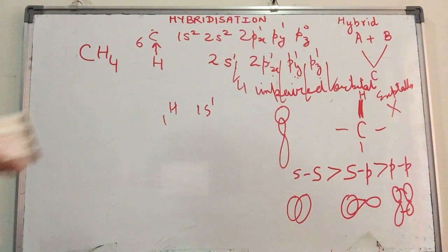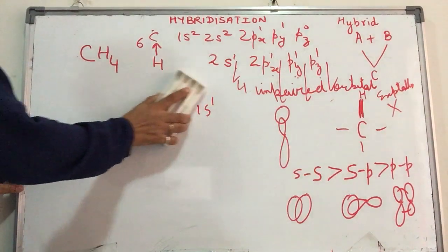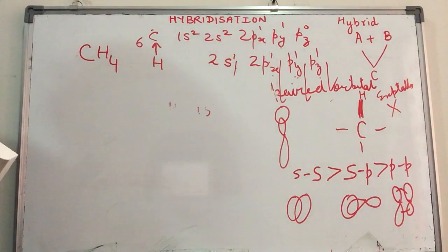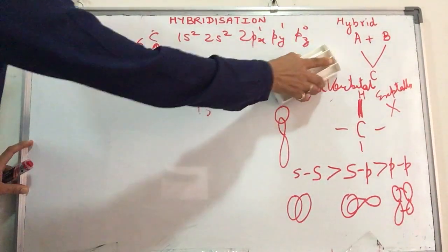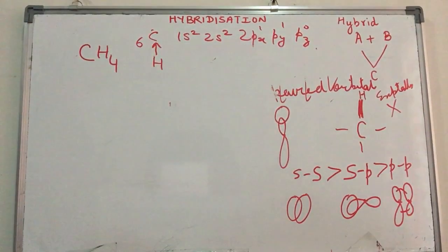How do we define it? The intermingling of atomic orbitals to give us new orbitals of equivalent energy is what is called hybridization. How do we understand and explain it? This is what we're going to do now.